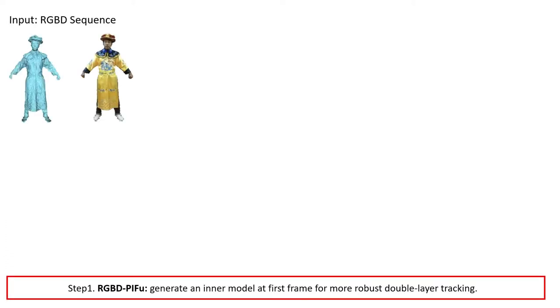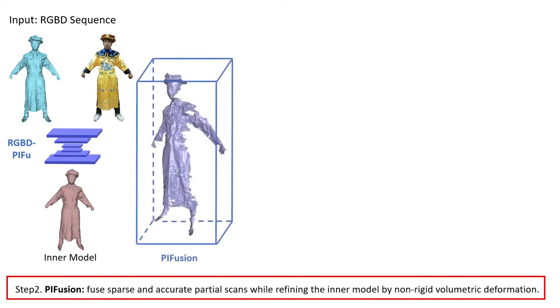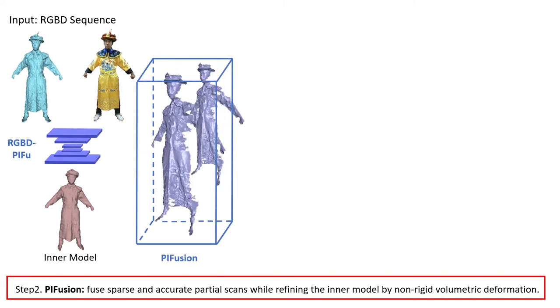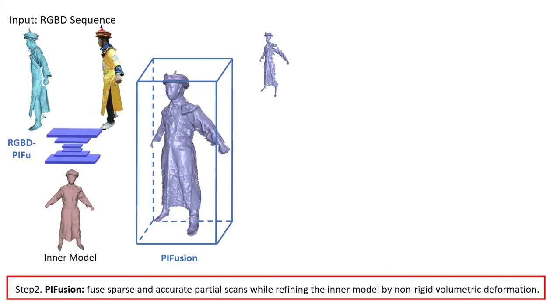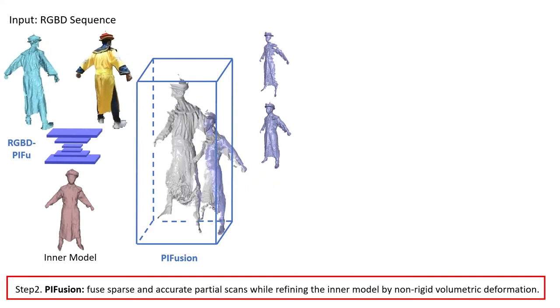At first, we utilize the adapted PIFu to generate an inner model for more robust double-layer tracking. Then, we perform the proposed PIFusion to fuse sparse scans, while refining the inner model by non-rigid volumetric deformation.